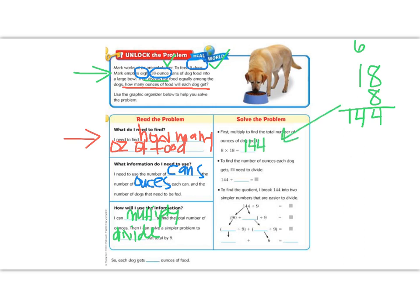Our next step says, to find the number of ounces each dog is going to get, I will divide. In order to divide this number, I could do 144 divided by nine. But before we do that, let's look at our quotient and break it down into easier parts. So if we look at 144, we've split it into 90 and something.